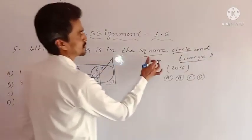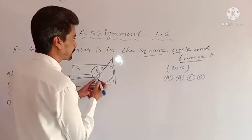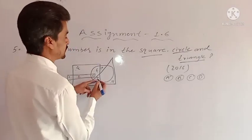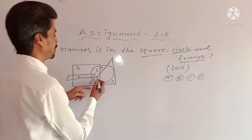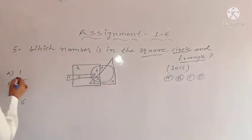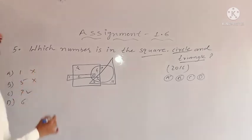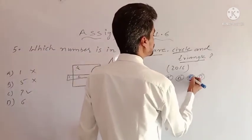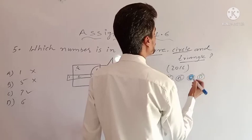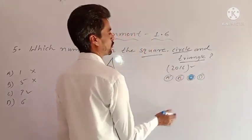Problem 5: Which number is in the square, circle, and triangle? 7 is in a square, 7 is in a circle, and 7 is in a triangle. So option A is wrong, option B 5 is wrong, option C 7 is right. I am coloring option C. This problem was also in the 2016 entrance examination.